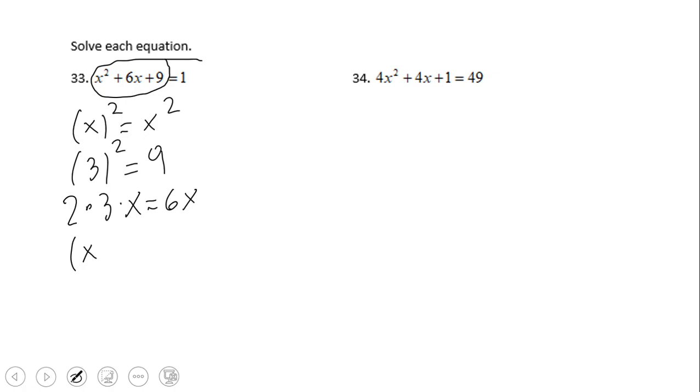So that tells us that the trinomial is nothing other than (x+3)² = 1. Now we notice this perfect square on the left side and one on the other side, so we're going to use the same property, the square root property. And the square root of 1 is 1.